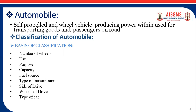According to the load capacity, vehicles are classified into light-duty vehicles and heavy-duty vehicles. Light-duty vehicles include cars, jeeps, scooters, and motorcycles, while heavy-duty vehicles include buses, trucks, and tankers.